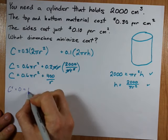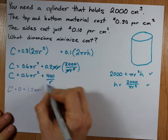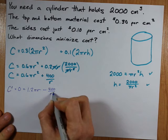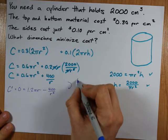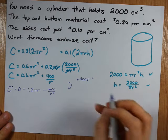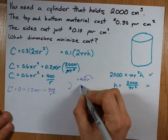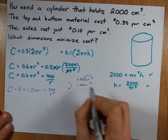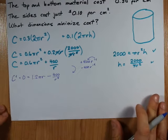Power rule, bring the 2 down, that's 1.2 pi r, and the derivative of this is going to be minus 400 over r squared. If you don't know how I did that so quickly, in my mind I rewrote it as plus 400 r to the negative 1. I took the negative 1, brought it down, and notched it down by 1 to make it minus 400 r to the negative 2. Then I rewrote it with the r squared on bottom. Yes, that's how I did it.